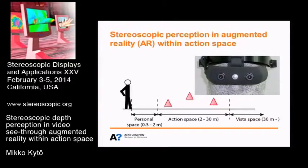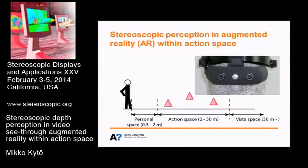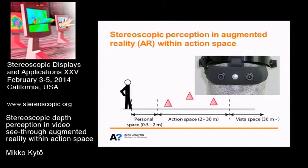The context of this presentation uses a video see-through augmented reality system — an HMD, head-mounted display. We focus on distances within action space, that are distances from 2 to 30 meters. Most depth perception studies have been conducted within the personal space range, meaning tasks like grasping, endoscopic surgery, and very close range tasks. But we focus on action space and objects that are above a ground plane.